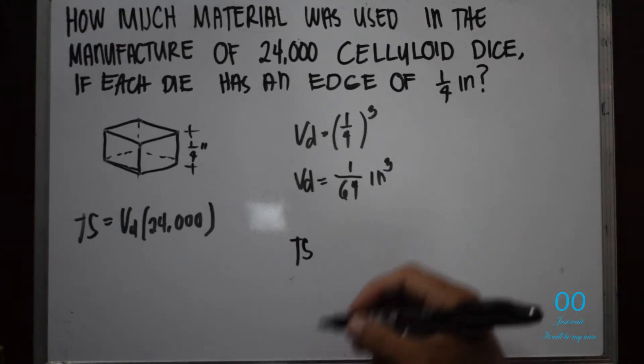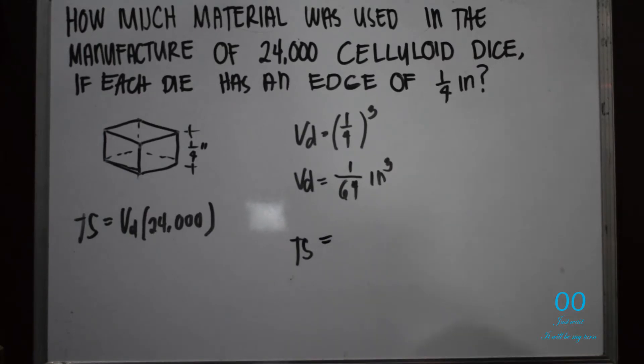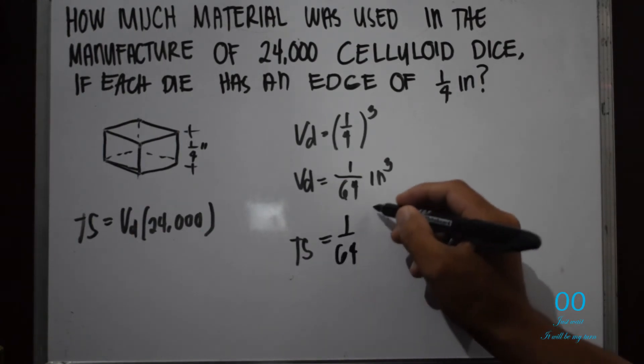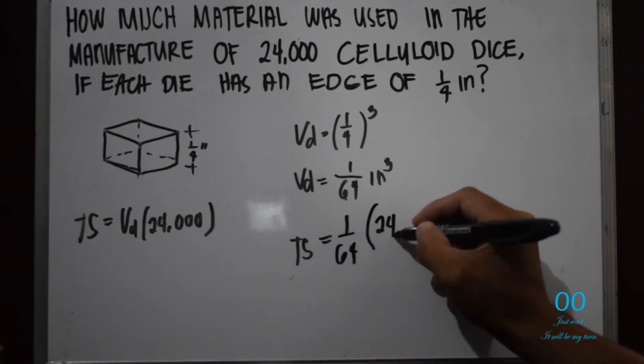Then we can calculate the total material used. So we'll be having here 1 over 64 times 24,000.